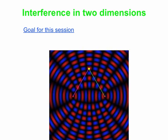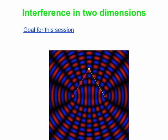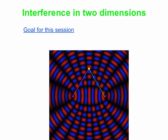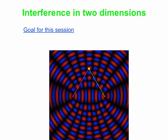This looks very complicated. There are basically two sources here sending out waves. And you get constructive and destructive interference going on that sets up this really neat pattern. And so we're going to try and understand this pattern.